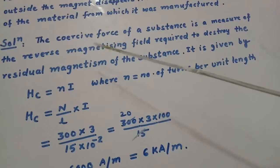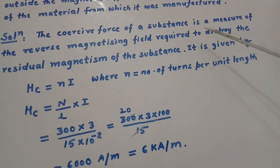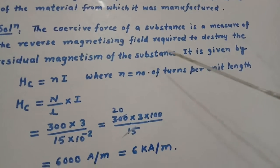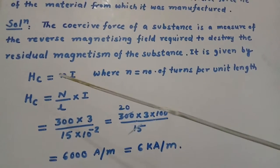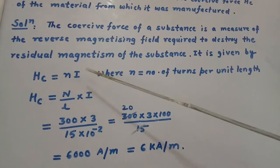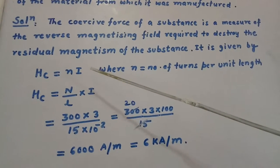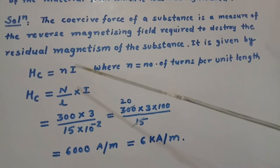It is given by Hc equals n I, where n is number of turns per unit length. Here the number of turns is given as 300.